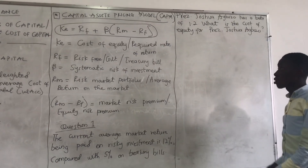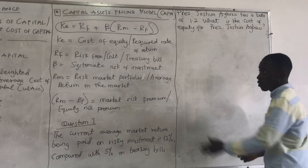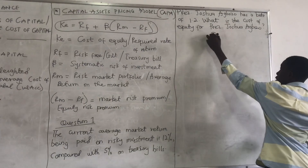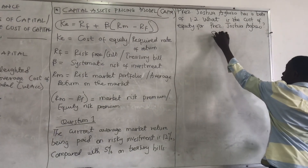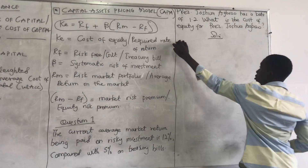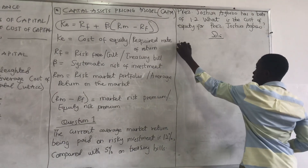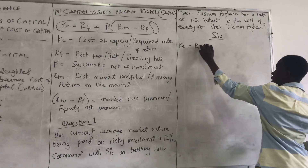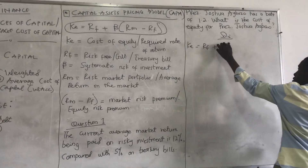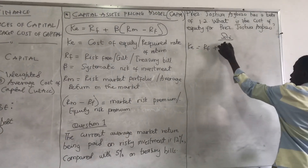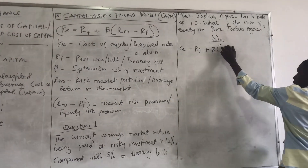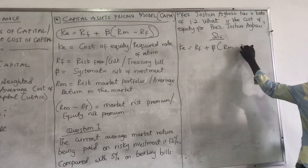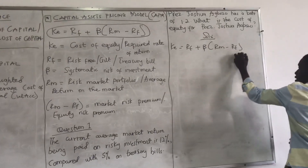We are asked to find the cost of equity. So we write down our formula: K equals RF plus beta times (RM minus RF).